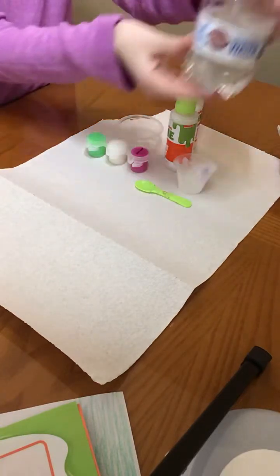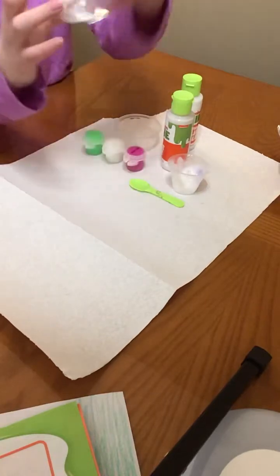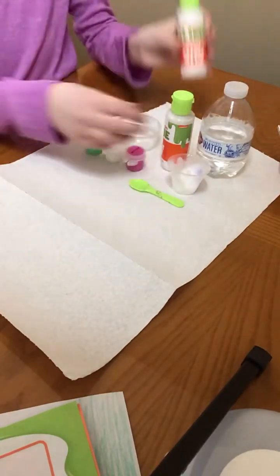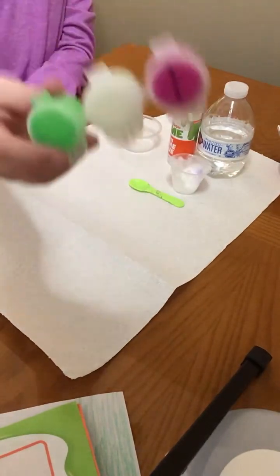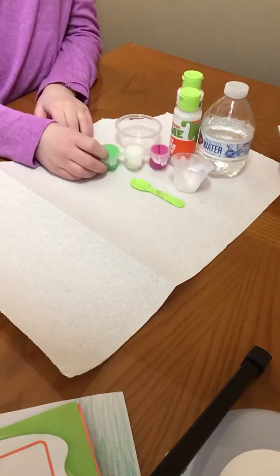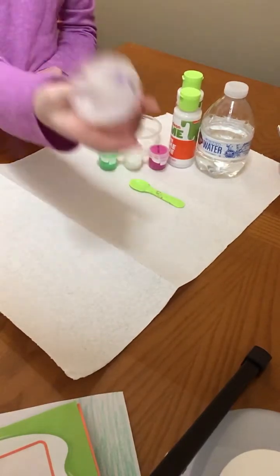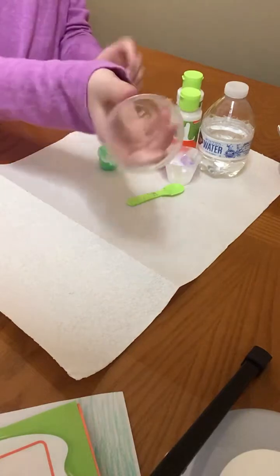You're going to need room temperature water, any type of glue, some activator, and you're going to need pink coloring. You need your measuring cup, which is, mine's kind of dirty, your little mixing spoon, and your extra bowl.